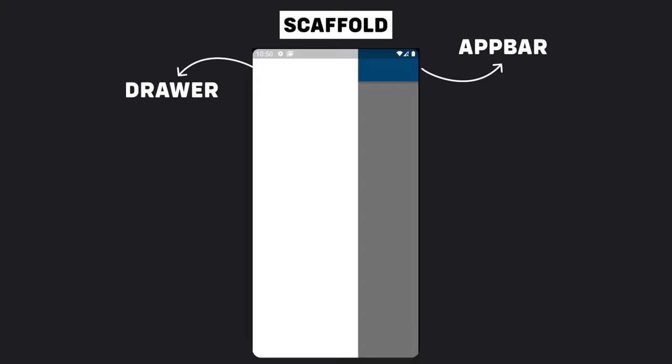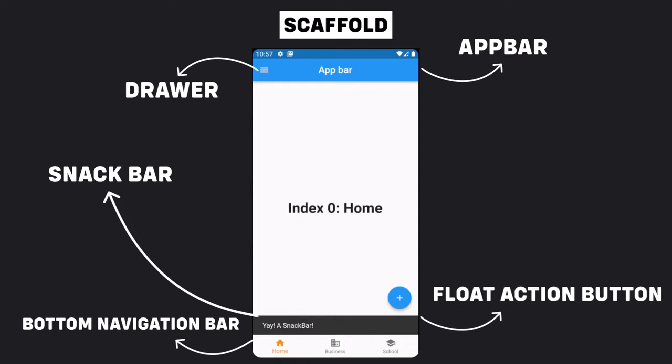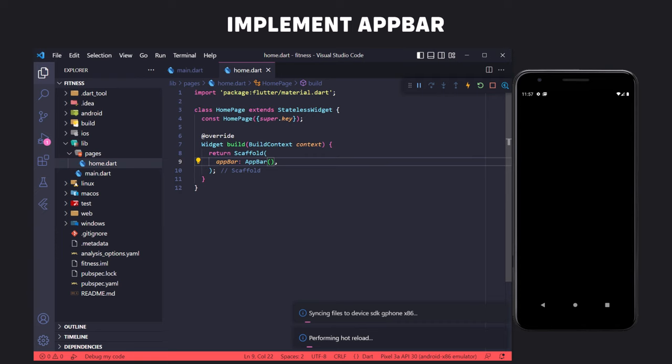In other words, Scaffold will expand and occupy the whole device screen, providing a framework to implement the basic Material Design layout of the application. Looking at the design, we can see that above we have an AppBar, so the first thing we need to do is add an AppBar to the Scaffold. To do this, we pass an AppBar widget to the appBar property in the Scaffold. Now we have to put the breakfast text in the center of the AppBar, but first let's add the font used in the design to the project.